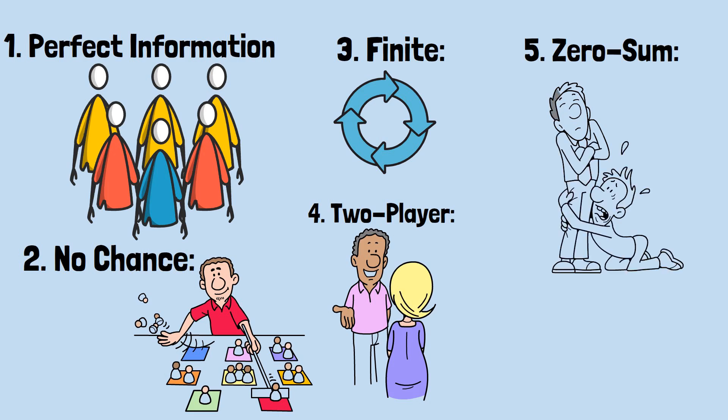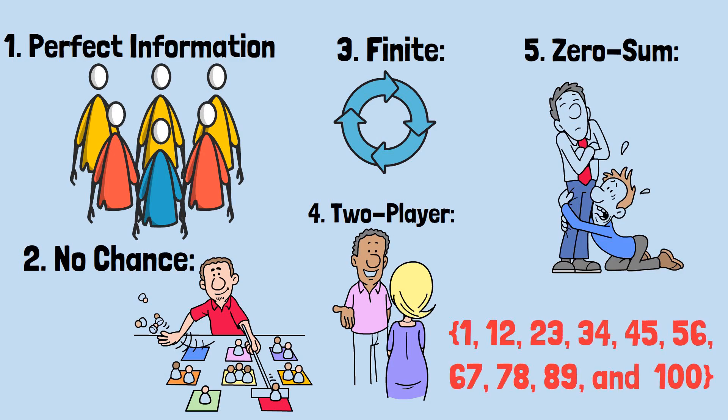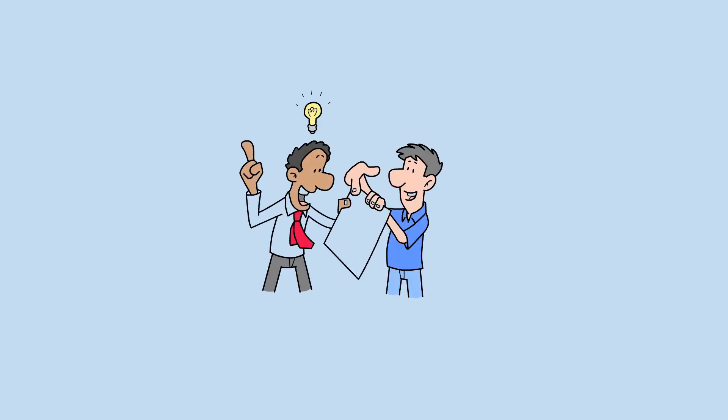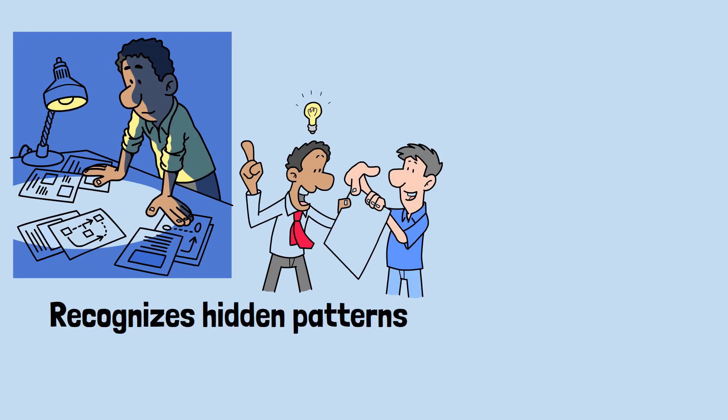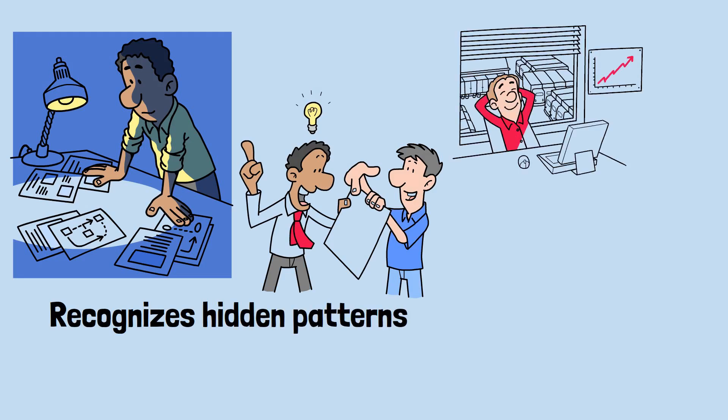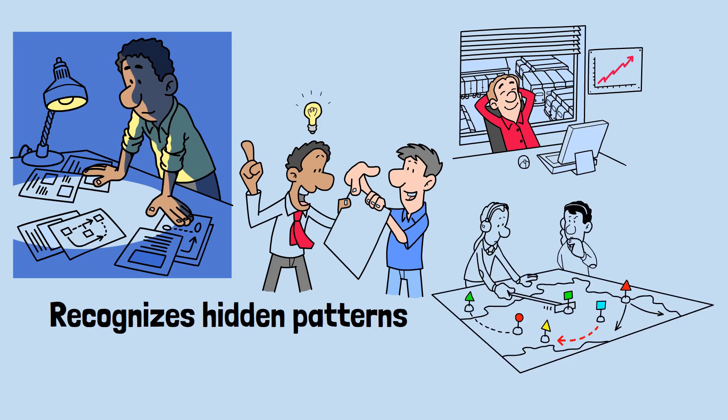When you truly grasp why the arithmetic sequence 1, 12, 23, 34 guarantees victory in the counting game, you're not just learning a party trick. You're developing the kind of systematic, strategic thinking that recognizes hidden patterns, works backward from desired outcomes, and transforms complex-seeming problems into manageable, step-by-step procedures.